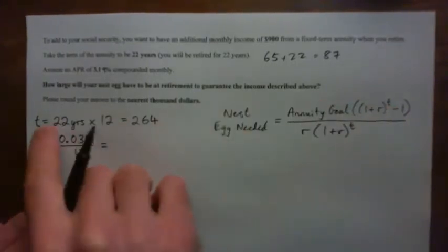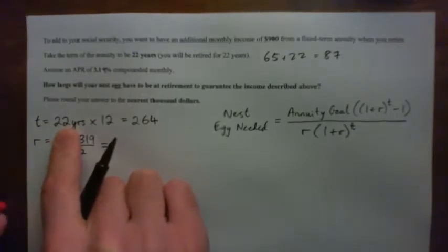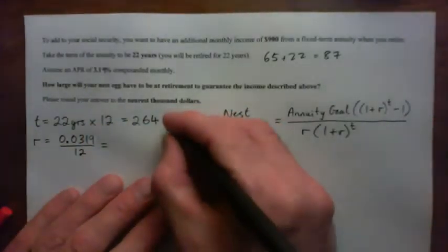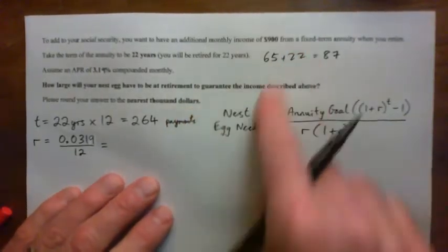So, number of payments T, well you take your 22 years and in each of those years is 12 months. So, times that by 12 and we get 264 monthly payments of $900 until your money runs out.